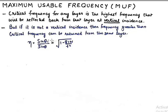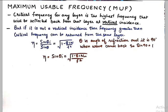We know sine theta I upon sine theta R is the angle of refraction, and this is equal to square root of 1 minus 81N upon F square. Theta R is the angle of refraction, and at the time of reflection from the layer it becomes 90 degrees. So when the wave comes back, the denominator becomes 1, so eta becomes sine theta I which becomes equivalent to this quantity.